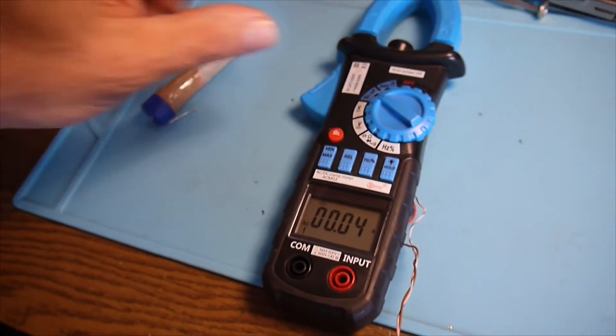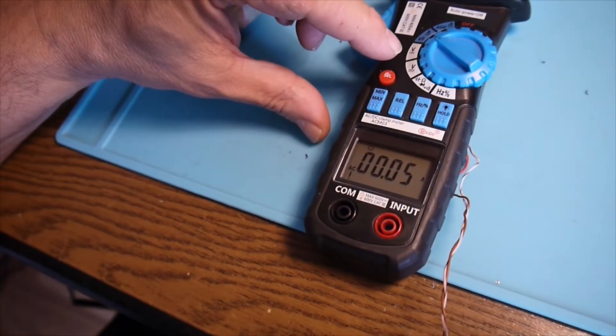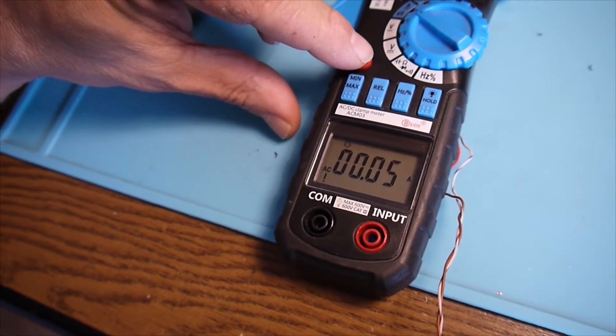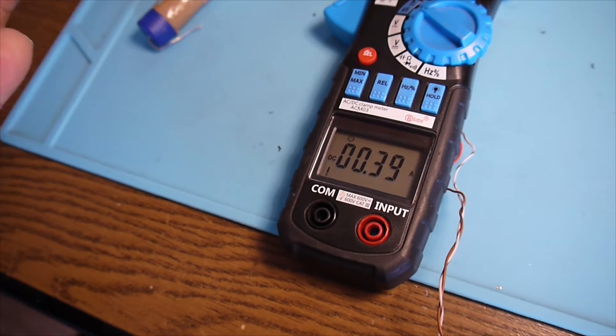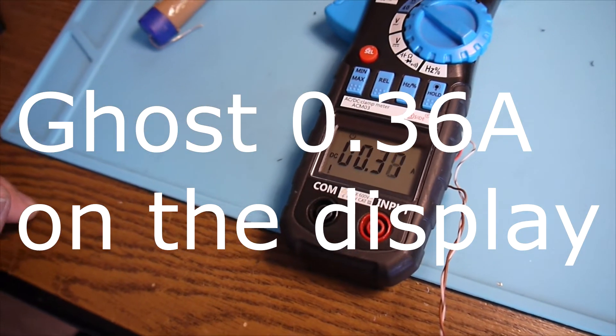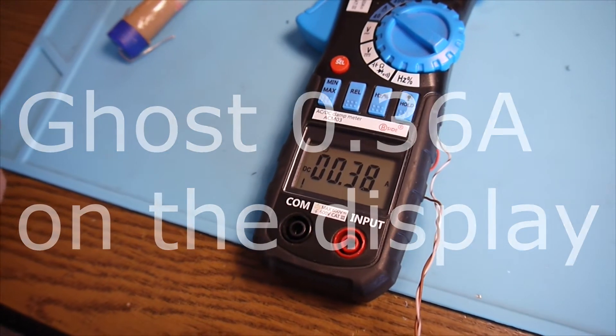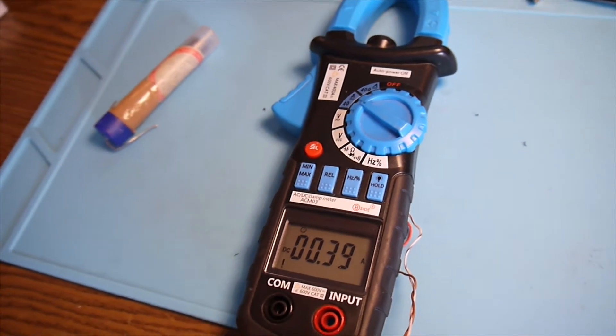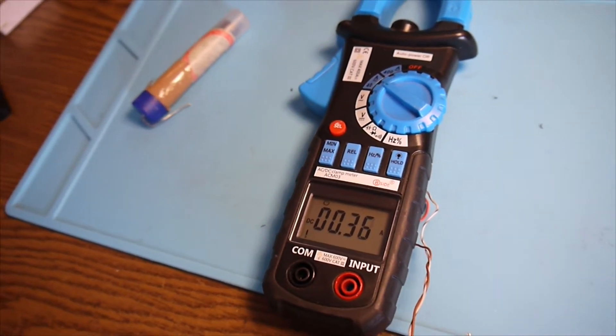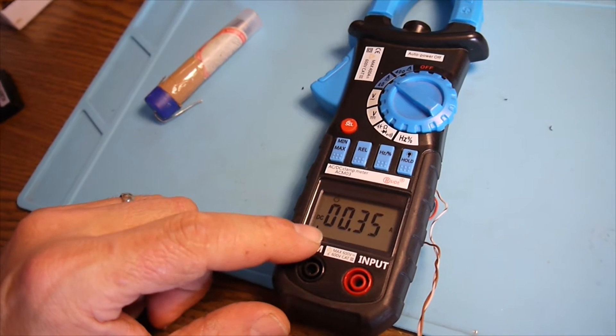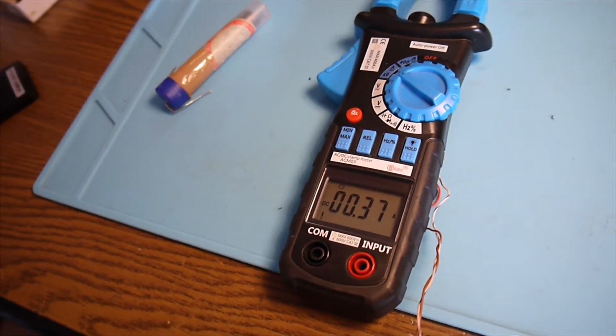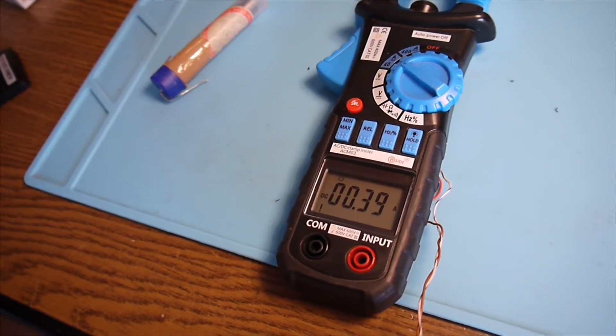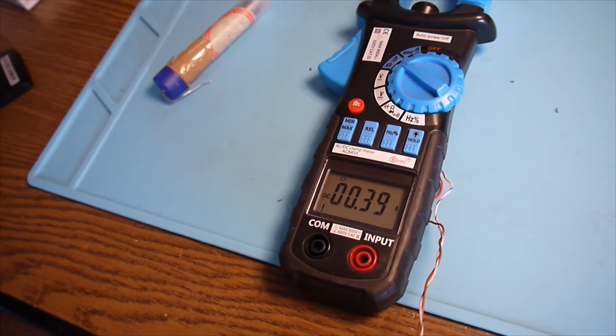But in the meantime I observed something. When I use it on DC direct current for measuring the amps, I have a residual display. What's funny is when I turn the wire upside down, changing the polarity somehow into the wire, the residual, almost 400 milliamps, gets deducted from the initial measured current.